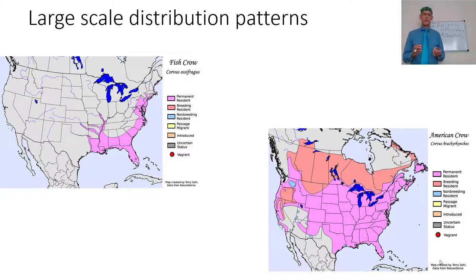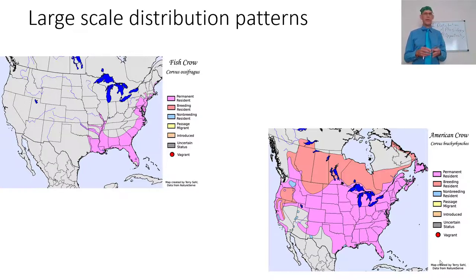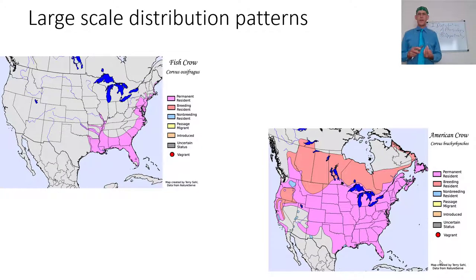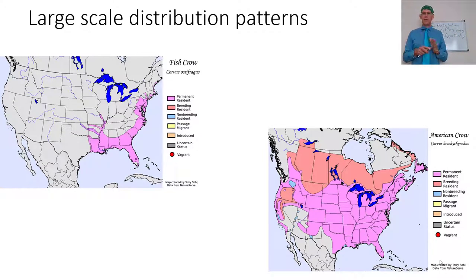There are large-scale distribution patterns. Look at the fish crow and the American crow — there are places where they're breeding permanent residents and places where they just go to breed. The fish crow is a permanent resident in most of the eastern United States; it can go up the Red River, up the Arkansas River, and up to Manhattan. The American crow is pretty much everywhere — it just likes being there, flocking in to mate and then going back.